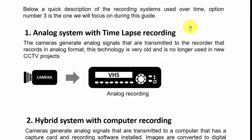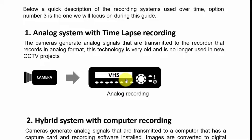Basically, the first stage is an analog system with time-lapse recording, which means you have a VHS recorder — an old recorder that uses tapes. You're recording video in analog format.